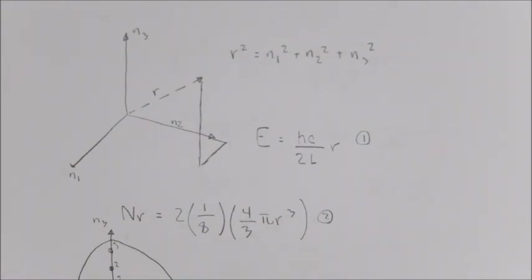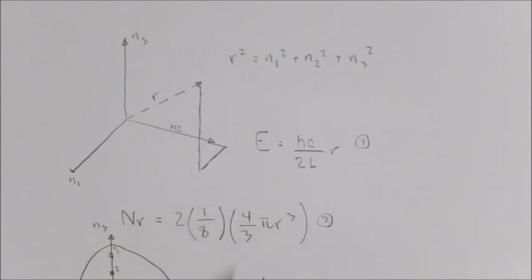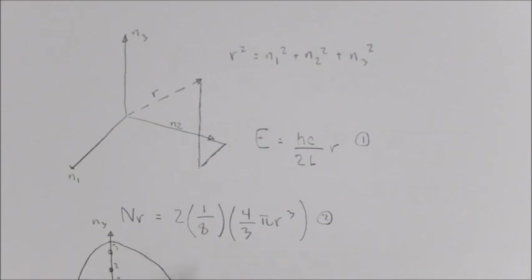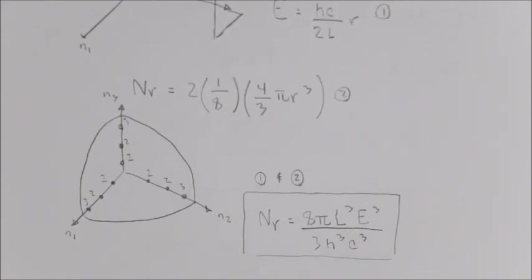Now the number of allowed energy states within this radius R is given by this formula shown right here. You may notice that this formula is very similar to the volume of a sphere with the addition of several multiplying factors. I've given here on the left a visualization of what this formula would look like.